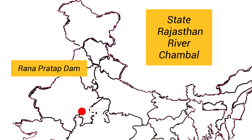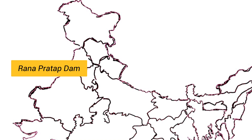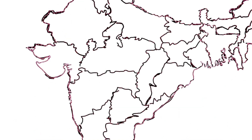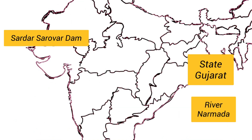The next dam is Rana Pratap Sagar Dam. It is located in the state of Rajasthan. It is on the river Chambal.